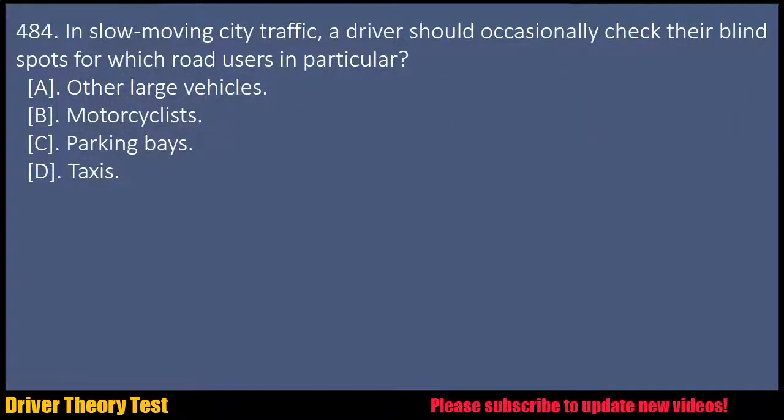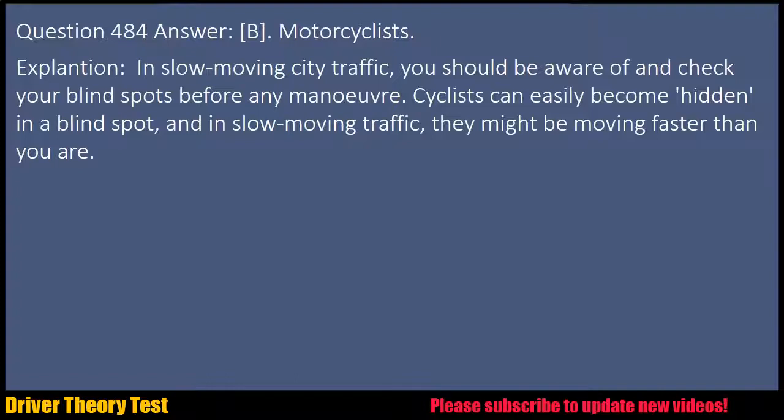Question 484: In slow-moving city traffic, a driver should occasionally check their blind spots for which road users in particular? A. Other large vehicles. B. Motorcyclists. C. Parking bays. D. Taxis. Answer: B. Motorcyclists. Explanation: In slow-moving city traffic, you should be aware of and check your blind spots before any manoeuvre. Cyclists can easily become hidden in a blind spot, and in slow-moving traffic, they might be moving faster than you are.